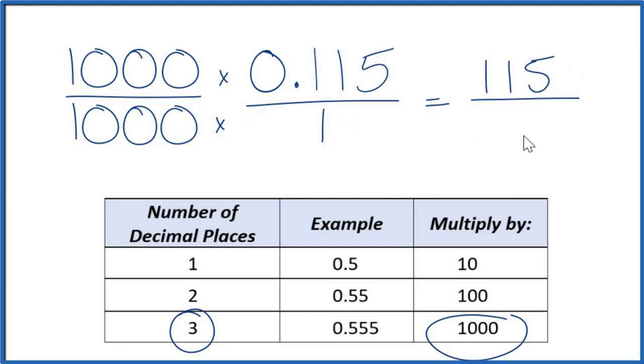1,000 times 1, that gives us 1,000. So when we have the decimal 0.115, that gives us the fraction 115 over 1,000.